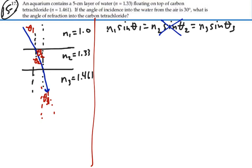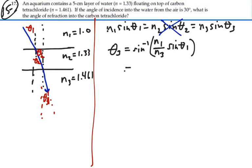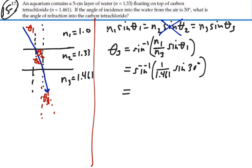If I want to get theta 3, I'll solve for that. So theta 3 will equal the inverse sine of index 1 over index 3, times sine theta 1. That's going to be the inverse sine of 1 over 1.461 times sine 30 degrees. The angle of refraction from the water into the carbon tetrachloride is 20.0 degrees. And even if we had used the N2 sine theta 2 approach and done all that work, we would have come up with the same answer: 20.0 degrees.